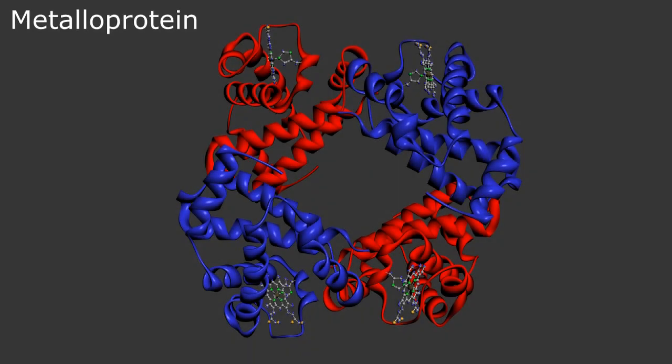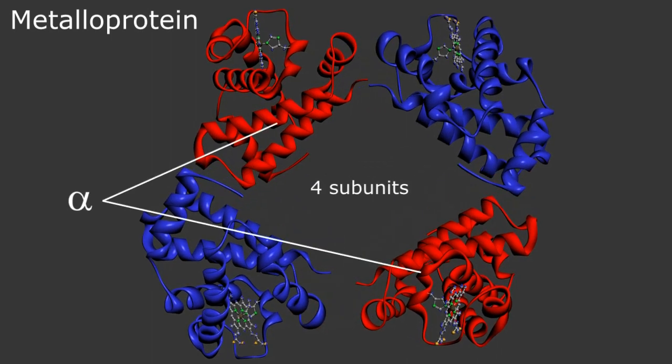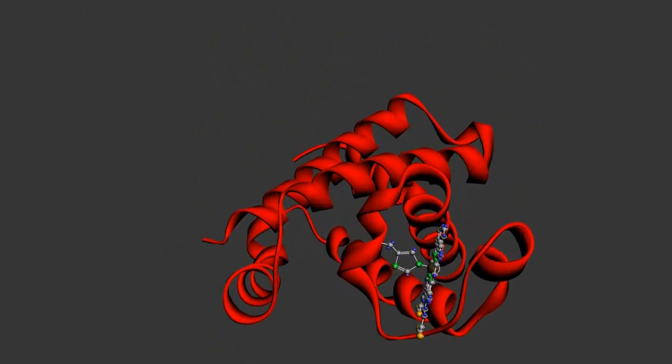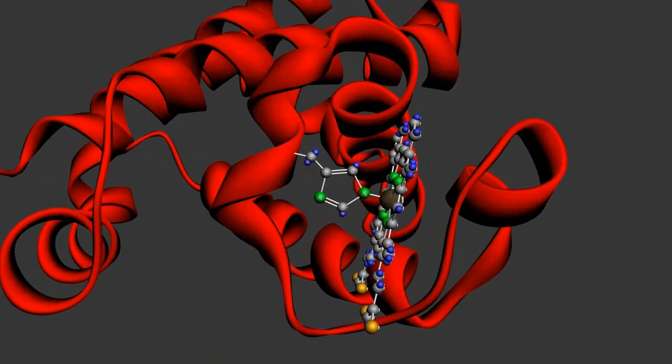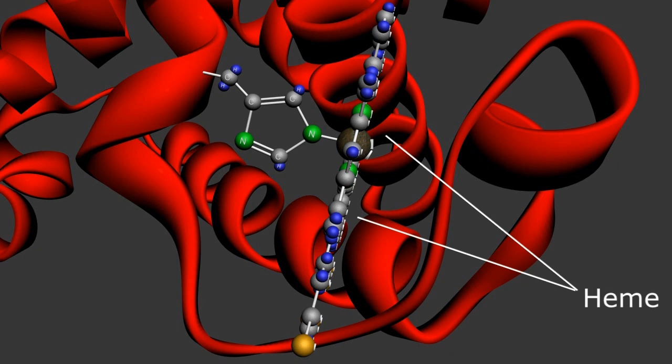Hemoglobin is a metalloprotein containing four subunits, two alpha and two beta. Looking at one of the subunits, there is a watertight globin protein surrounding the non-protonaceous iron-containing heme molecule which is attached to the globin chain with a pentagonal histidine amino acid.